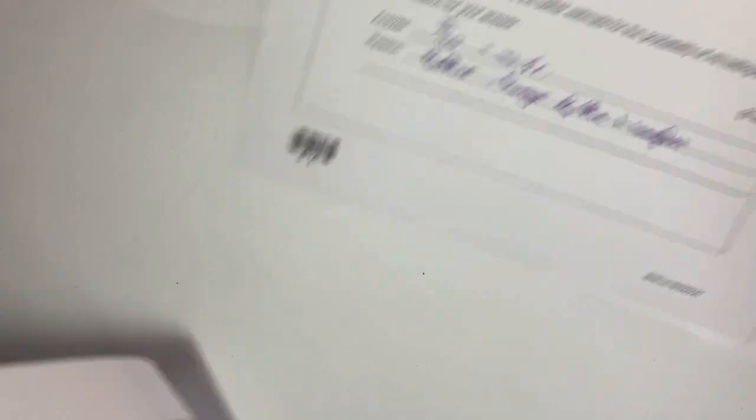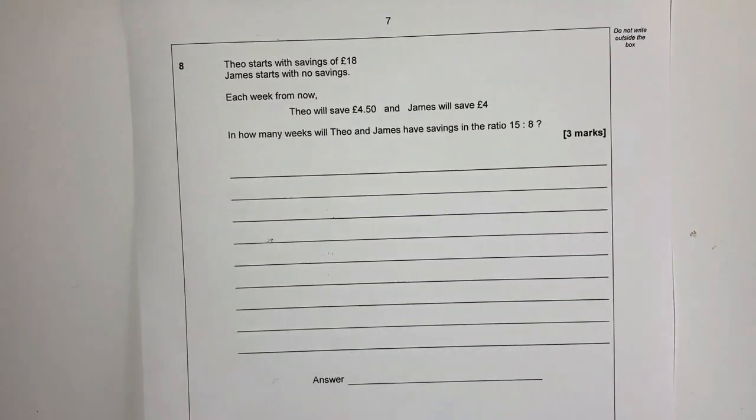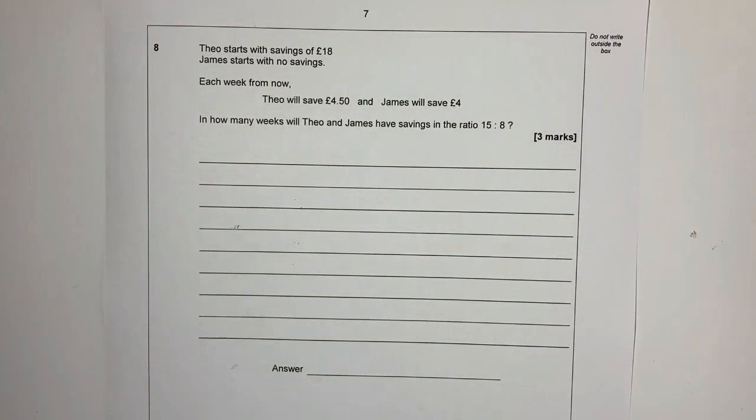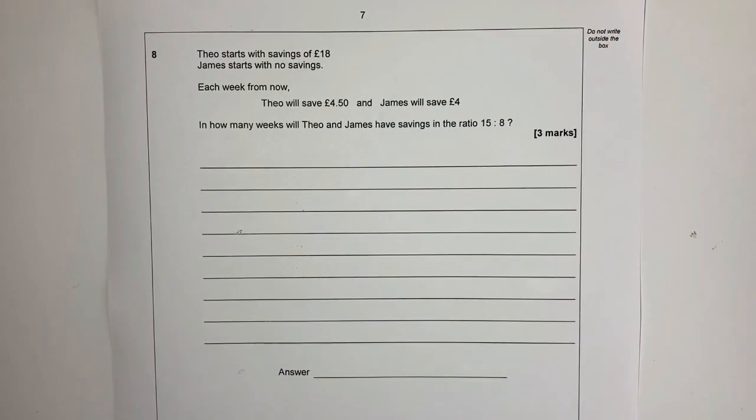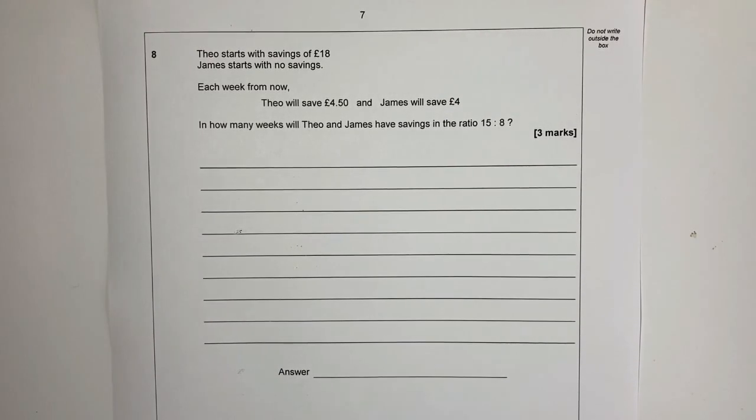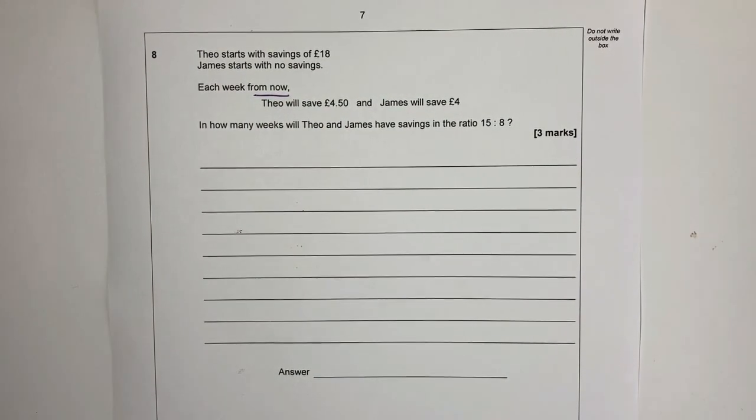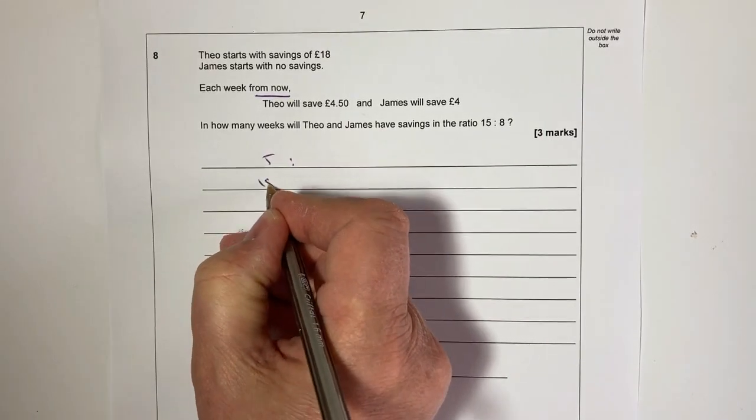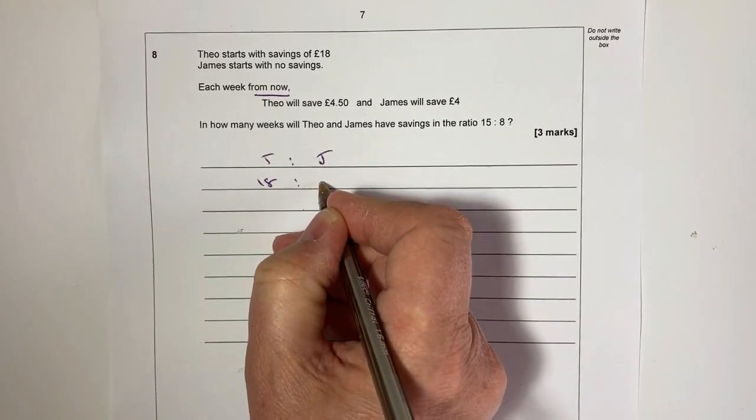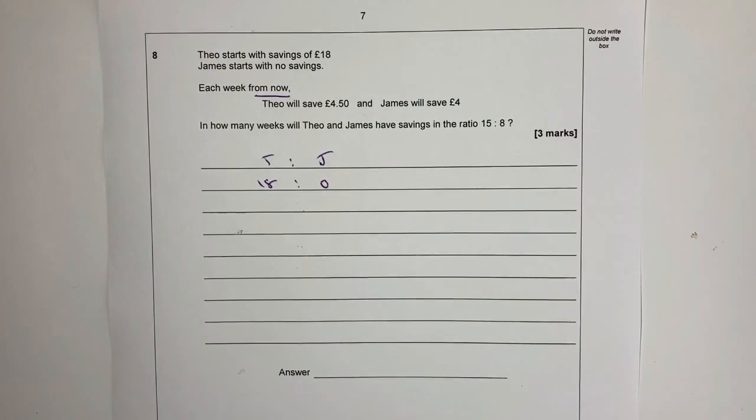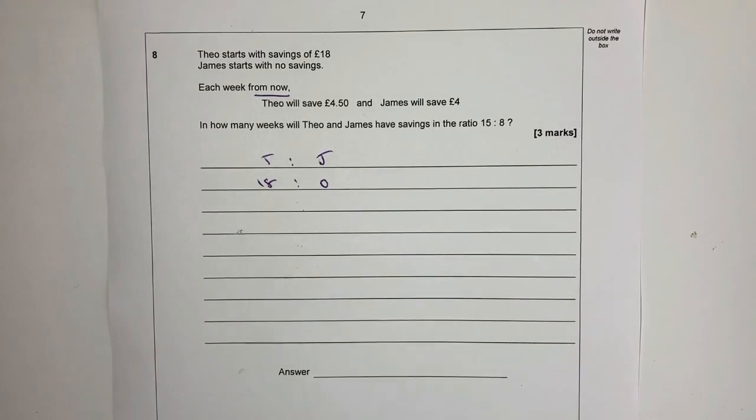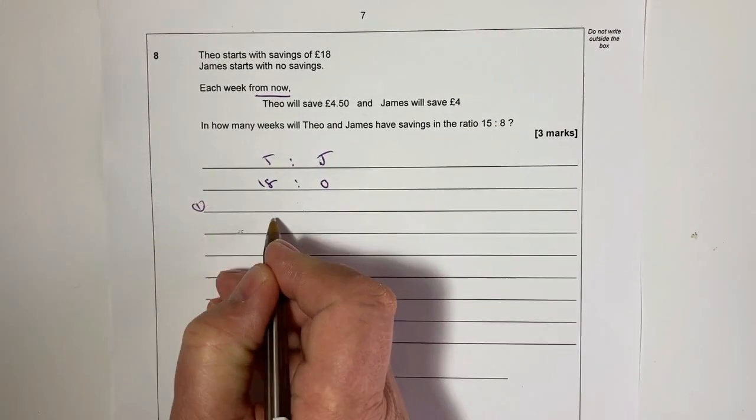So let's move on. We're on about 10 minutes of actual video time, but hopefully you've had the opportunity to work through these and your time schedule should be about 20 minutes. Let's look at question number eight. You've got to read it really, very carefully indeed. It says Theo starts with savings of £18, James starts with none, each week from now. This is the important thing - from now. So at the beginning we've got Theo has got £18 and James has got zero. How many weeks will it be before Theo and James have savings in the ratio of 15 to 8?